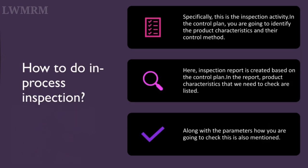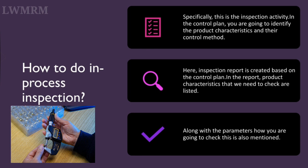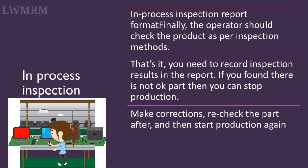How to do in-process inspection. Specifically, this is the inspection activity. In the control plan, you identify the product characteristics and their control method. An inspection report is created based on the control plan. In the report, the product characteristics that we need to check are listed, along with the parameters and how you are going to check them. The operator should check the product as per inspection methods and record inspection results in the report. If you find a not-okay part, you can stop production, make corrections, re-check the part, and then start production again.